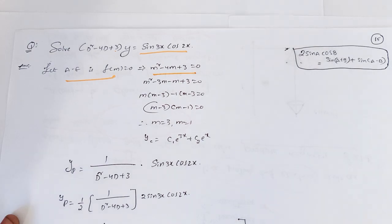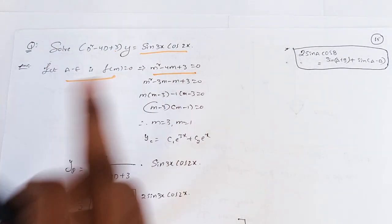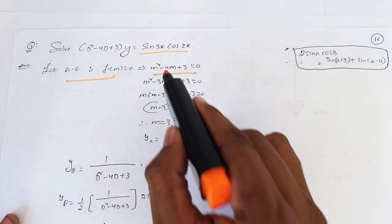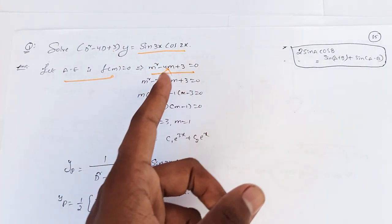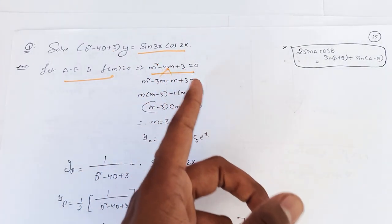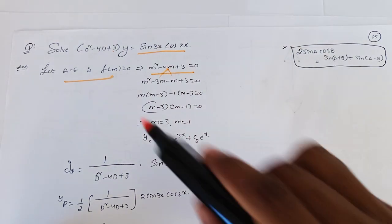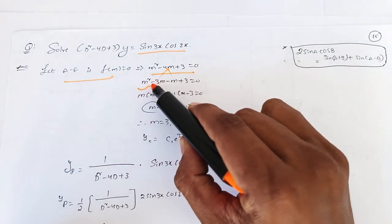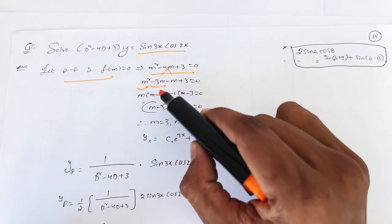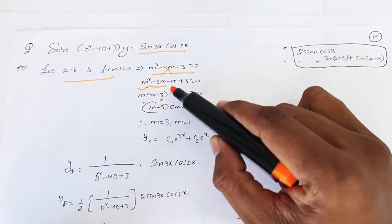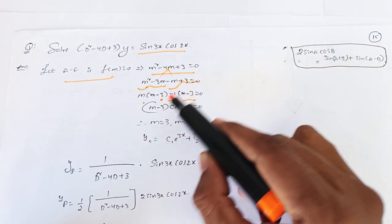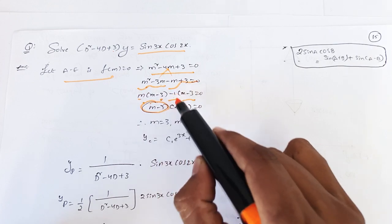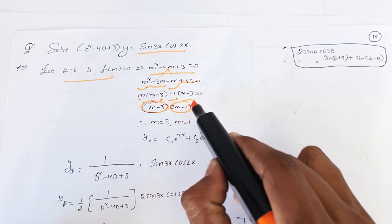The auxiliary equation: m squared minus 3m minus m plus 3 is equal to zero. So m is common: m(m minus 3), and then m minus 3, m minus 1 is equal to zero.